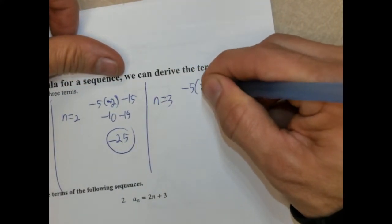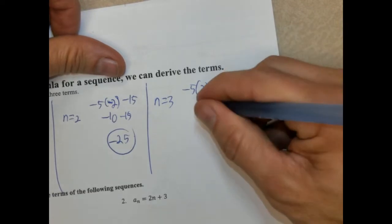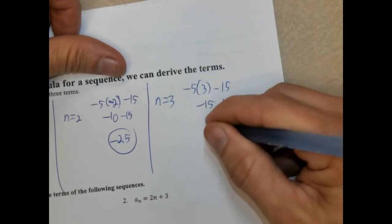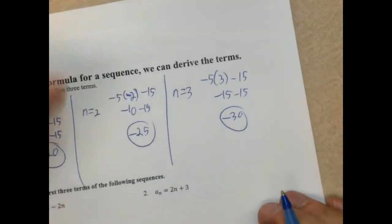And when n is 3, negative 5 times 3 minus 15, negative 15 minus 15, negative 30.